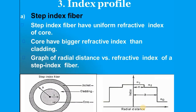Based on the refractive index, optical fibers are classified into step index fiber and graded index fiber. The structure of an optical fiber has an inner cylindrical layer called the core with radius a, surrounded by a coaxial cylindrical region called the cladding. The refractive index of the cladding is always less than that of the core — the core has a larger refractive index than the cladding.